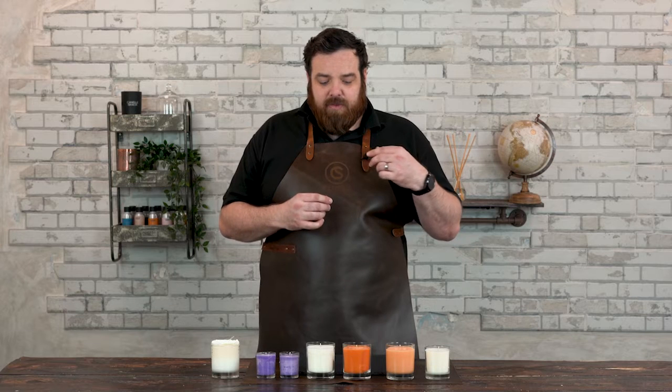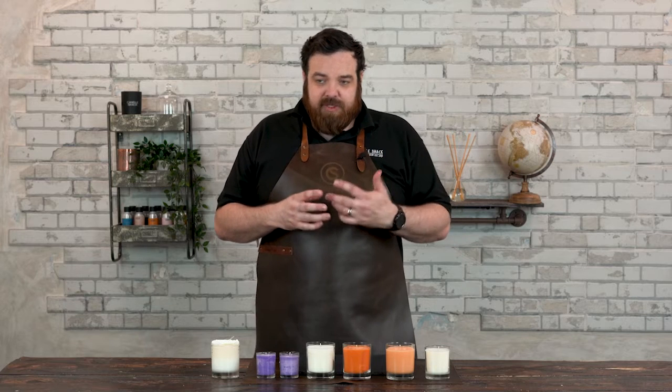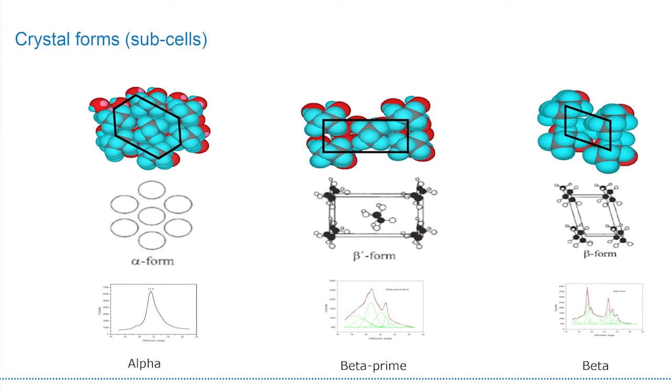If the crystals form in alpha or beta prime morphs, they will form in a non-uniform way. This non-uniform crystal structure is where we get the polymorphism.